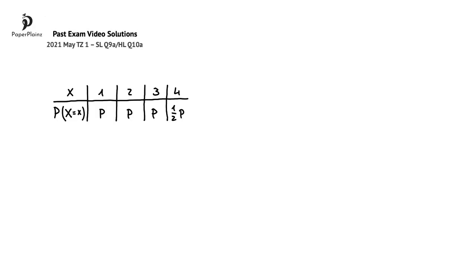In this question, we are given the probability distribution for a four-sided die, and we have to find the value of p.